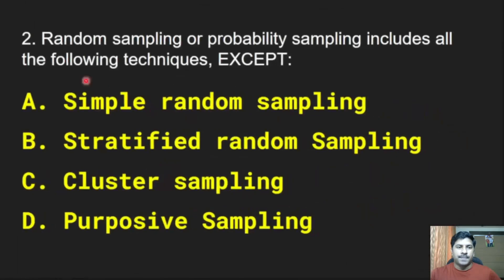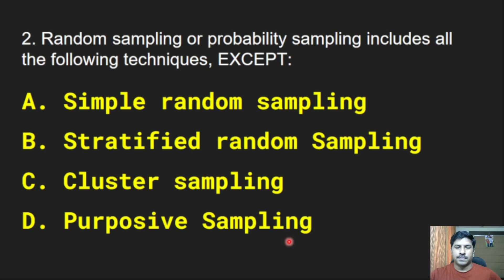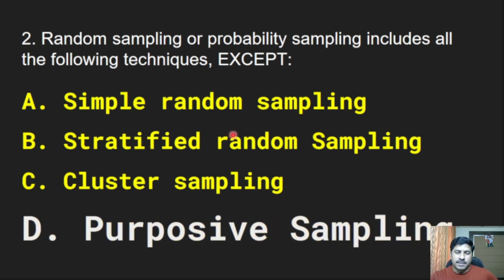Next question: Random sampling or probability sampling includes all of the following techniques except — simple random sampling, stratified random sampling, cluster sampling, or purposive sampling? The correct answer is purposive sampling. Random sampling includes simple random sampling, stratified random sampling, and cluster sampling, but not purposive sampling.